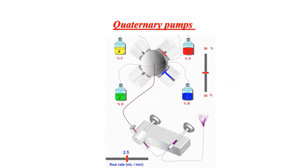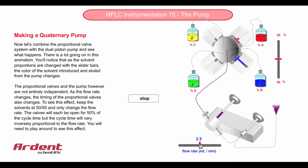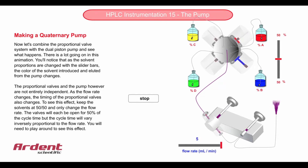This is the complete design of the quaternary pump. As we can see, there is only one dual piston pump, and the mixing chamber contains a proportionating valve. We can see one valve for each solvent, which controls the ratio of the solvents reaching the column. To understand how the proportionating valve controls the solvent ratio, let's look at some examples.